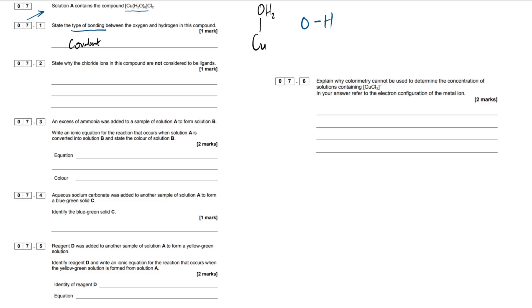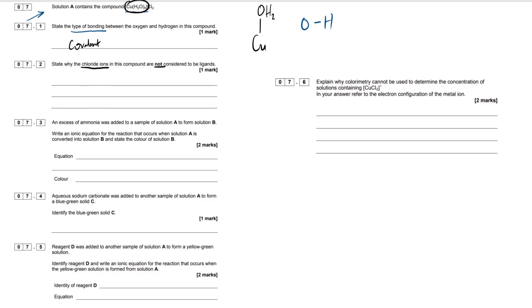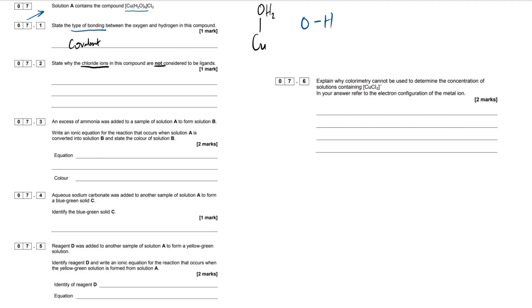They're going to try and trick you and most students I assume would just chuck coordinate on the page when in reality, it should be simply covalent. Now it's not going to be hydrogen bonding because that would occur between two molecules of water, not within one molecule on its own. So next question then, states why the chloride ions within this compound are not considered to be ligands. So all we have to think to ourselves here is what is the definition of a ligand.